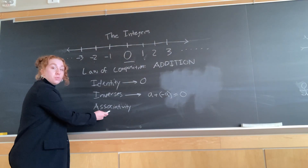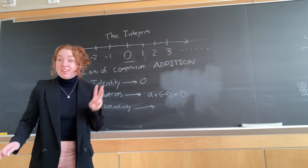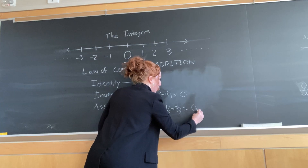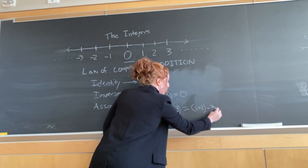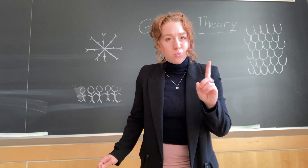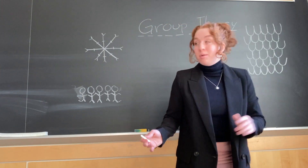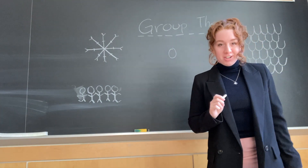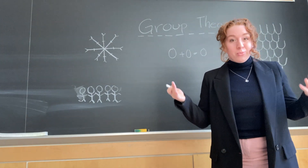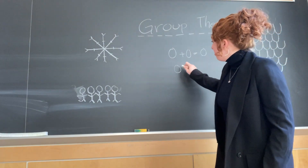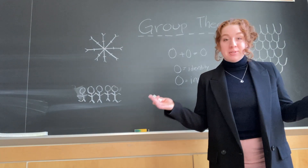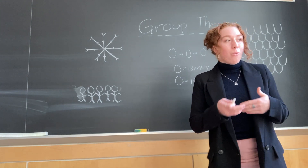Finally, the integers adhere to associativity because we can combine any three integers and it doesn't matter where we put the parentheses: 1 plus 2 plus 3 equals 1 plus (2 plus 3). So the integers are a group, but there are actually countless other groups out there. Some of them are as simple as just one element large — just an identity element, zero. Zero plus zero equals zero, so we stay inside the set. Zero is the identity, and zero is its own inverse. And zero adheres to associativity because it doesn't matter where we put parentheses when adding zeros together.